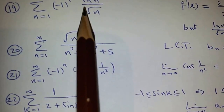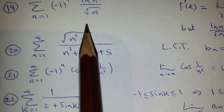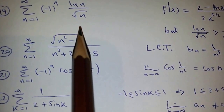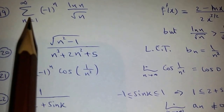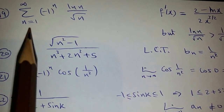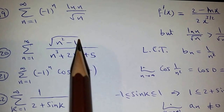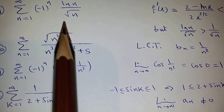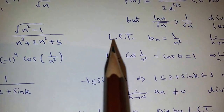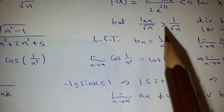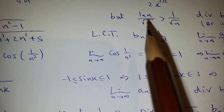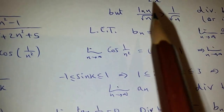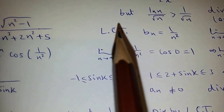We know that ln(N) over square root of N, using the integral test, is divergent. So, summation of the absolute value of A_N is divergent by the integral test. Or you can use the comparison test, because ln(N) when N is greater than 3 is greater than 1, and this series is divergent, so this is divergent by the comparison test.